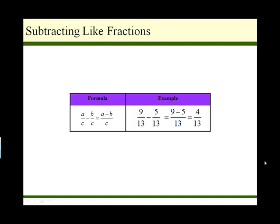So 9 over 13 minus 5 over 13. We take 9 minus 5 is 4, keep the same denominator, 13.